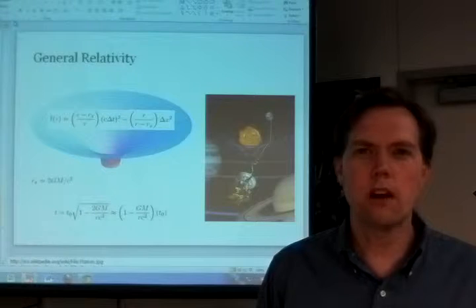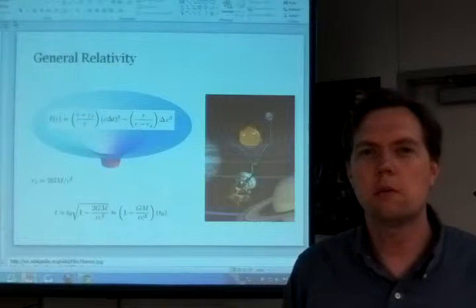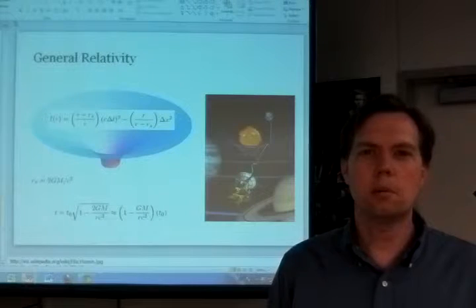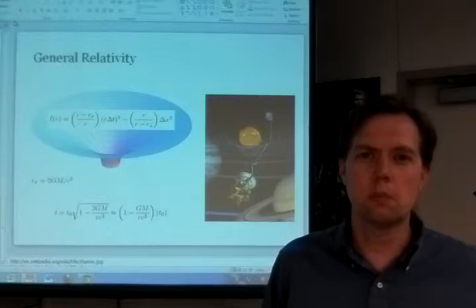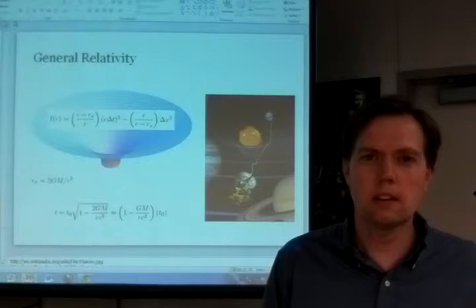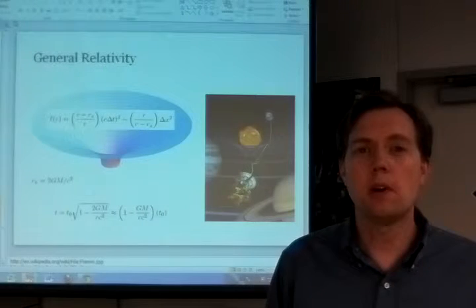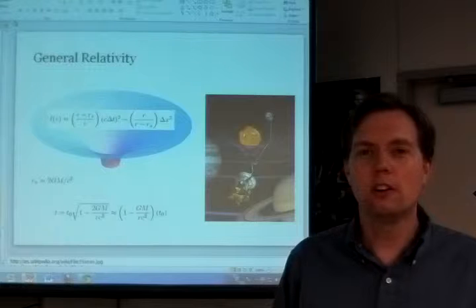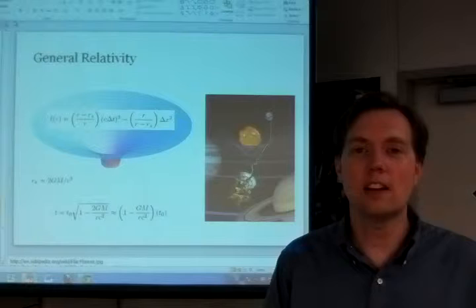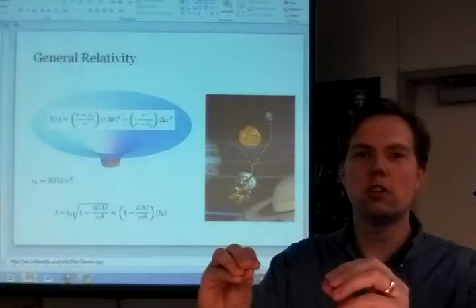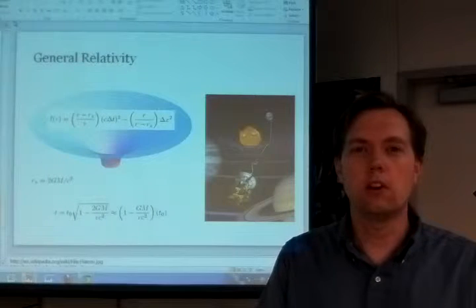There is something called the gravitomagnetic force, also called frame dragging, and it has been measured. It's very difficult to measure because the gravitational force is so small compared to electromagnetism, on the order of 10 to the 20. But that has been measured. Basically, you've got two parallel lines of current, which means you've got two masses in motion.